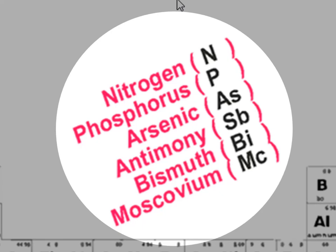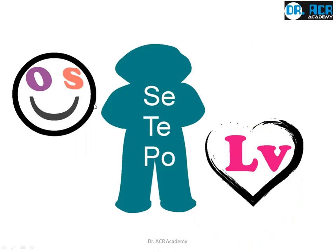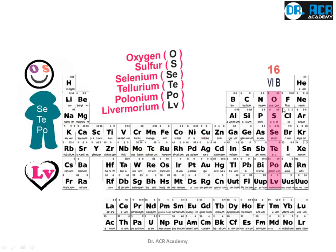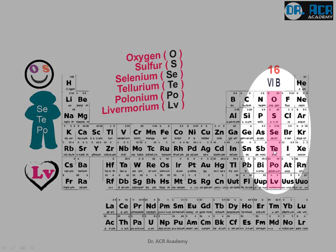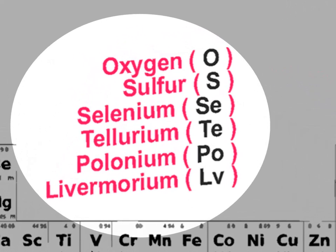Now we come to the sixteenth group. In the same forest, there was a girl named O.S. who was beautiful, and a handsome boy named Setipo. They had love between them. O.S., Setipo, Love. This is how it is linked to the periodic table, and these are its real names.